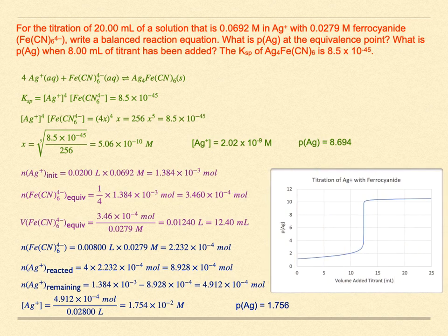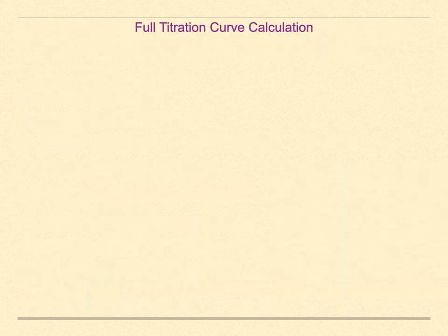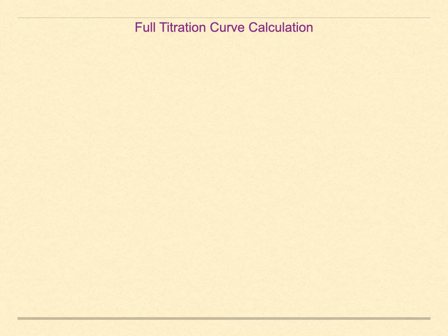Note how the PAg is rising during this titration. A precipitation titration curve will have the general shape of the curve of the titration of an acid when we are following the analyte, and it will follow the shape of a titration of a base when we are following the titrant. It is quite a lot to calculate a point on the titration curve; here is a better way to find the entire curve using a spreadsheet, thinking about the problem backwards.